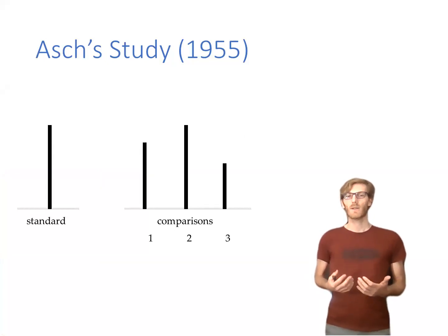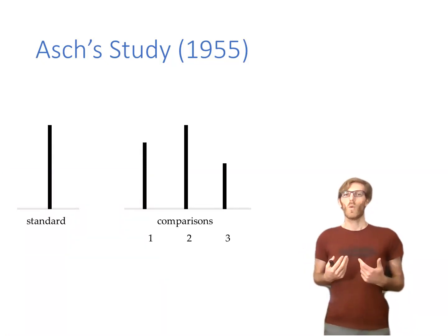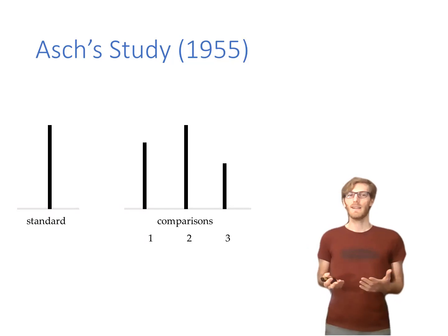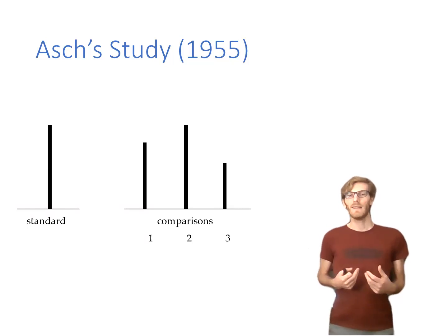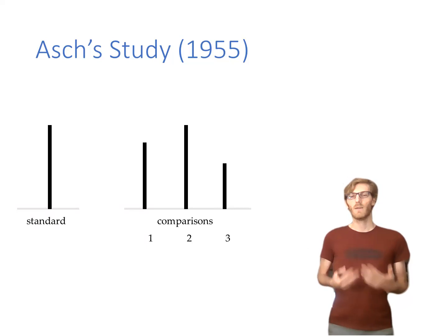Asch's line study is one of the famous early studies in social psychology. The study gave participants a very simple task: it asked them to look at a line called the standard and just say which other line had the same length. If you were to carry out the task right now, it's not particularly difficult — you would certainly all give the correct answer.